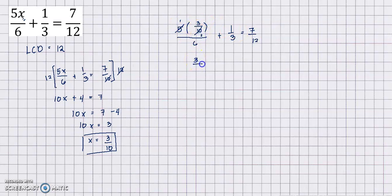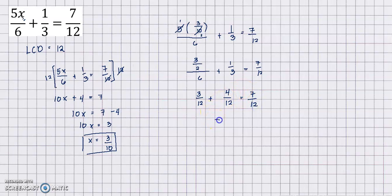So 3 halves divided by 6 gives 3 over 12. Converting one-third to have denominator 12: 12 divided by 3 is 4, times 1 is 4, so we get 4 over 12. This means 3 over 12 plus 4 over 12 equals 7 over 12, which simplifies to 7 over 12 equals 7 over 12 — a true statement. So 3 over 10 is the solution.